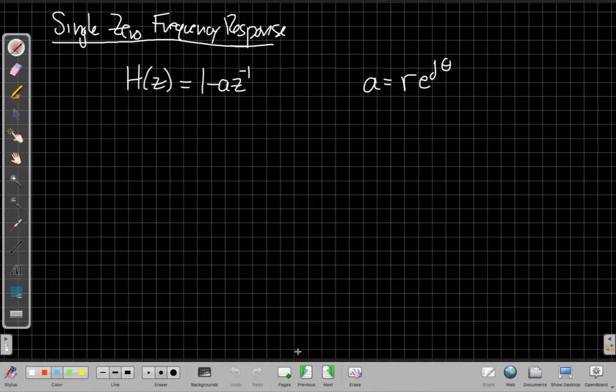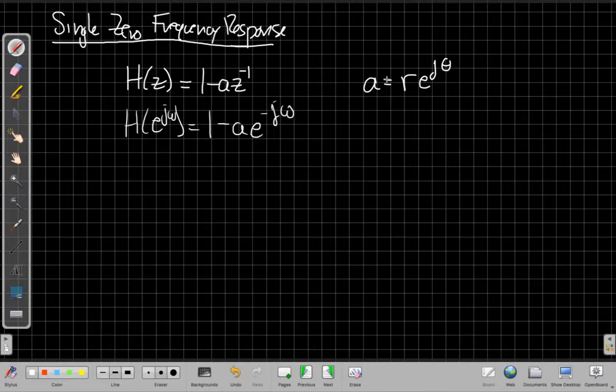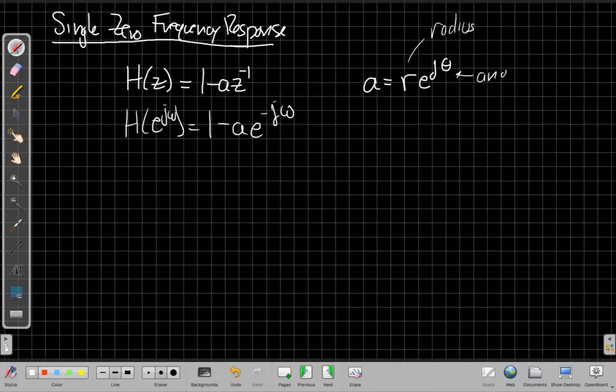Alright, so if I think about my frequency response for a single zero, again, I'd start by setting z equal to e^{jω}. So when I do that, I have z is e^{jω}, a 1 minus a e^{-jω}. And again, I'm going to assume my a, I'll need it in a little while, has a polar form where this r is the radius or magnitude, and the θ is the angle.